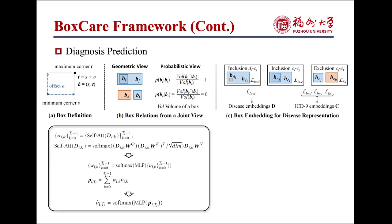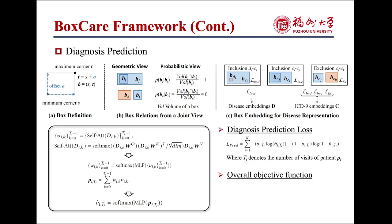Furthermore, we aggregate these representations learned by boxes with an attention mechanism to obtain patient embeddings. Since diagnosis prediction is a multi-label classification task, we use dense layers with a softmax function to calculate the predicted probability. We then perform diagnosis prediction via the corresponding objective function. Finally, the overall objective function of BoxCare is defined, where lambda is a hyperparameter to control the regularization for box relation modeling.